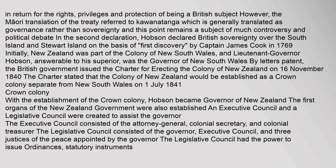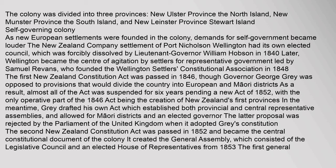The Legislative Council had the power to issue ordinances and statutory instruments. The Colony was divided into three provinces: New Ulster Province (the North Island), New Munster Province (the South Island), and New Leinster Province (Stewart Island).